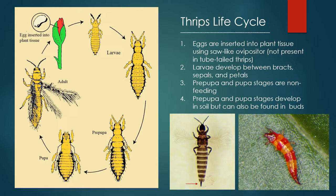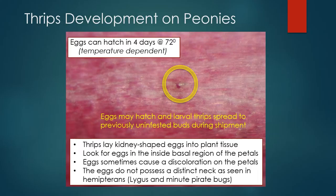Larvae can be found developing between bracts, sepals, and petals. Before becoming adults, thrips immatures pass through pre-pupal and pupal stages that generally occur in soil, but may be found in peony buds. Here we can see a close-up photograph of a thrips egg that has been inserted into the petal of a peony bud. As most adult thrips are between 1 to 2 millimeters in length, you can imagine just how small these eggs must be.